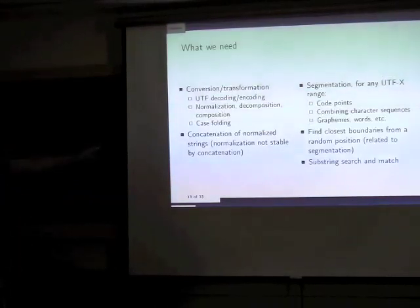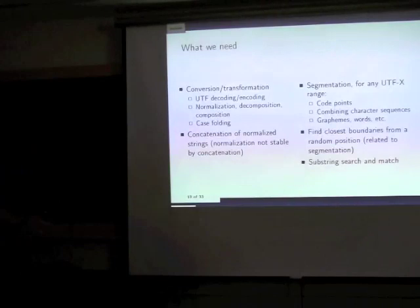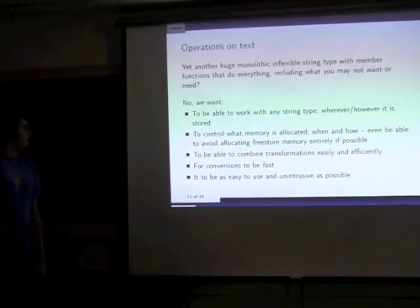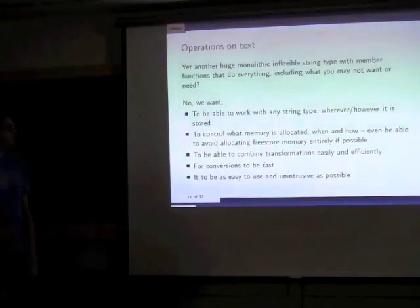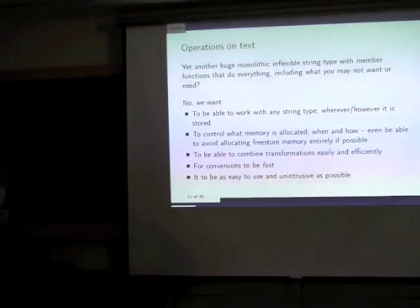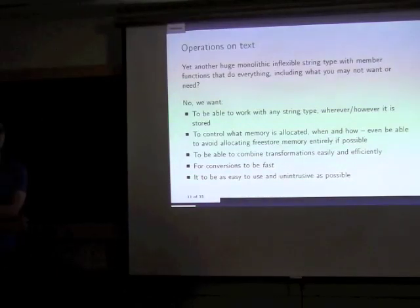Normalization is not stable by concatenation: if the string on the right starts with a combining character, you might have to renormalize the boundary in the middle. If we want to do all that, maybe the solution is yet another string type — a popular idea on the Boost mailing list — but I don't think that's a good solution. I think it should be more algorithm-centric rather than data-centric.